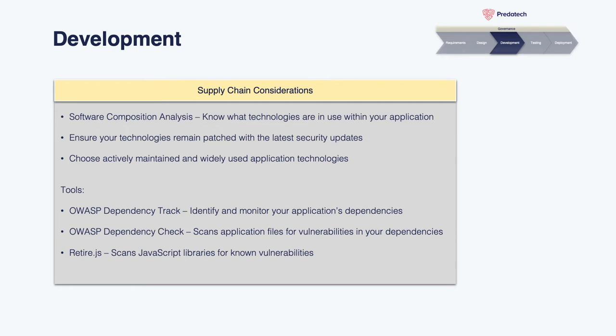A textbook example commonly brought up is the Equifax breach of 2017. Equifax, a major US corporation, holds a heap of sensitive data like payment card information, and the breach led to over 146 million users' data being leaked. It was actually the result of an unpatched vulnerability in Apache Struts, the Java framework. The vulnerability was very easily patched — it just hadn't been done. It led to the breach impacting all those people simply because of poor dependency management.